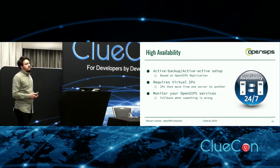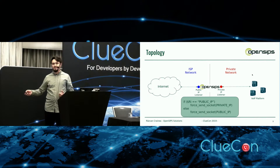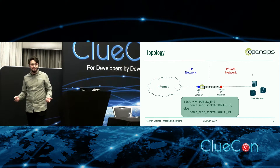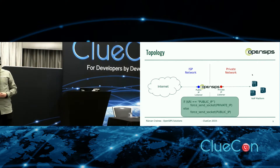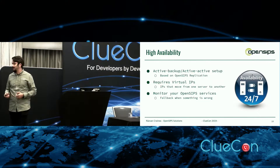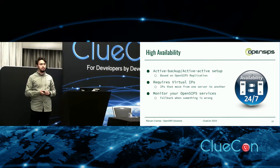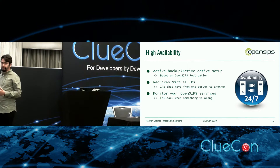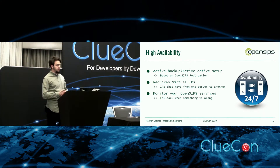However, things are not that easy, because nobody uses this single-instance setup in production. In production, we really need to have high availability. If not, we might run into problems when one of the OpenSips instances goes down, when there are network glitches or whatever. So we have to ensure that our platform is highly available.